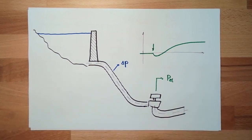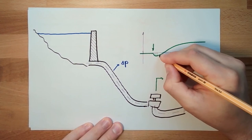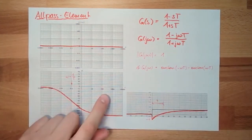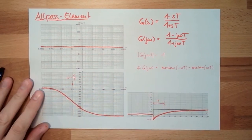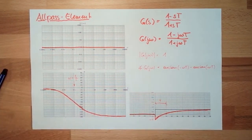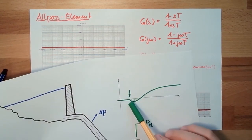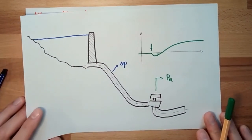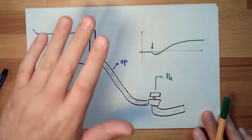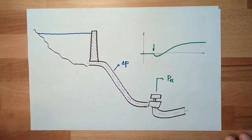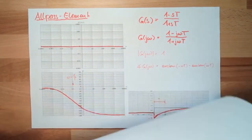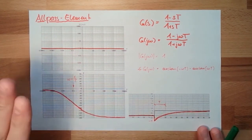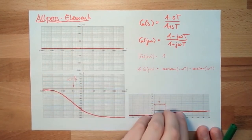Whenever you see a system where at first it seems to move in the wrong direction, there is an all-pass element inside. This step response — jumping the wrong way and then recovering — shows exactly that all-pass behavior. So to summarize: frequency response, step response, and the formula for the all-pass element.